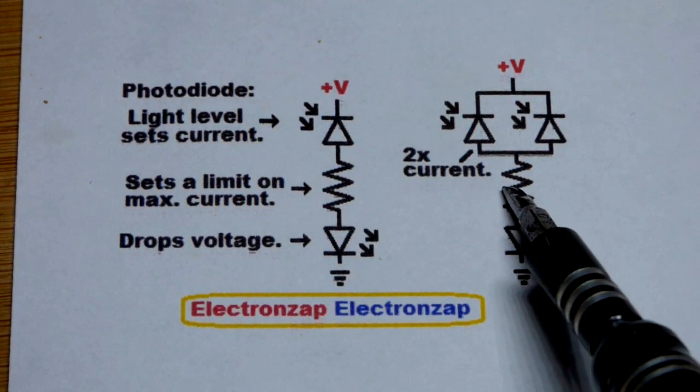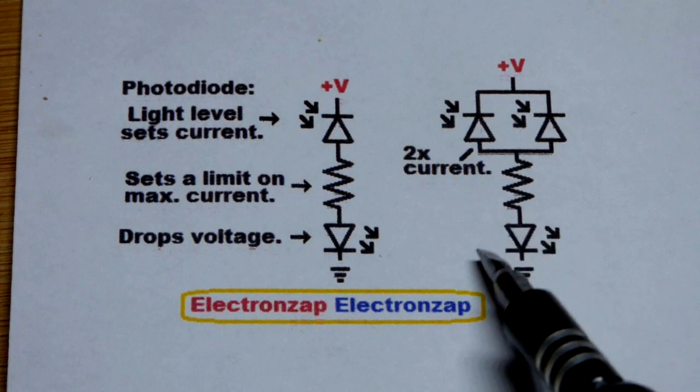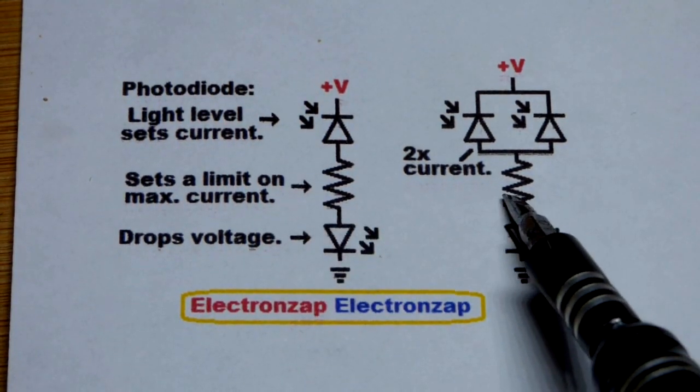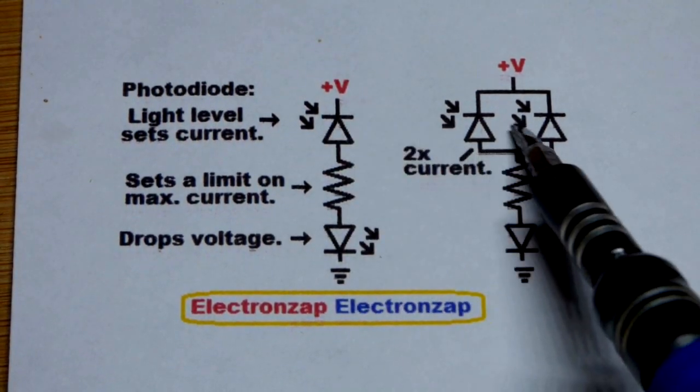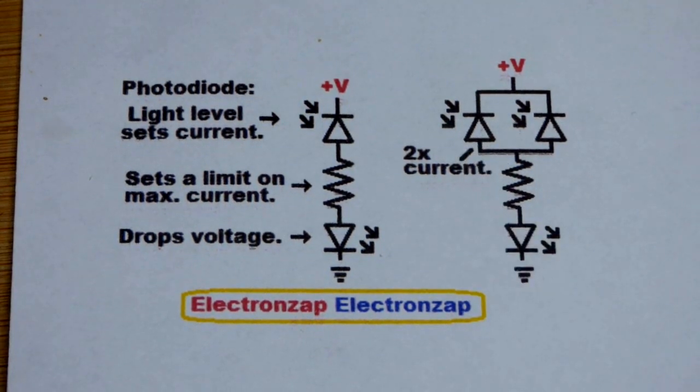Then it's going to limit current. Otherwise as long as you stay below whatever it's going to limit with its diode load right there, then the photodiode is going to be what sets the current below that limit.